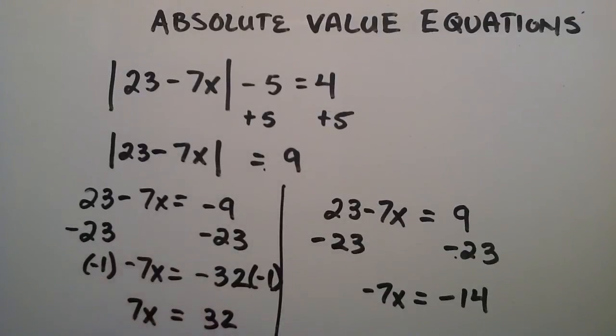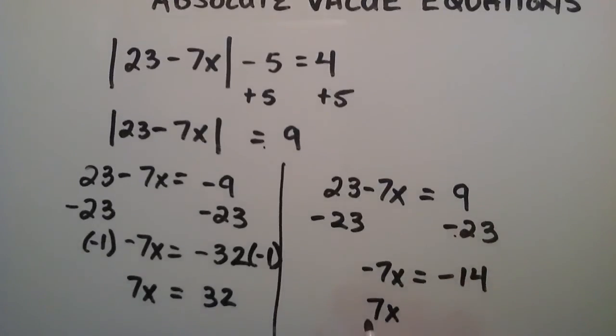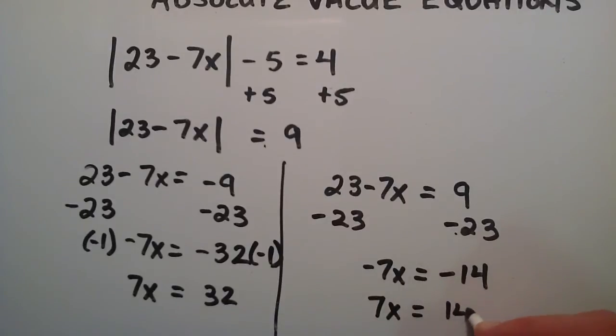So we have 7x on the left hand side. And by a similar procedure, we basically can turn this into positive values as well. 7x is equal to 14.